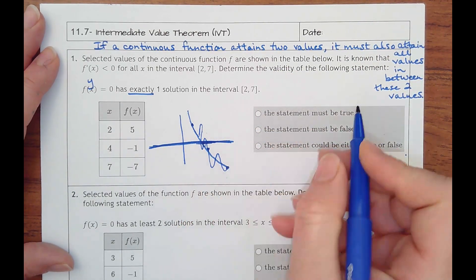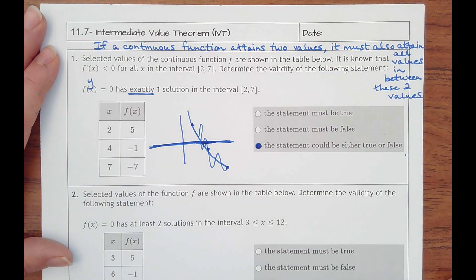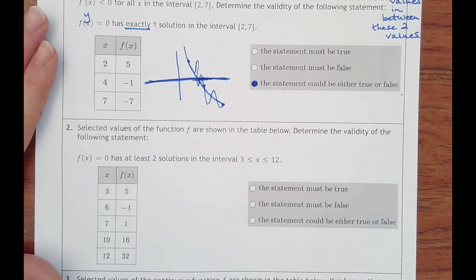And even between this interval. So we could say that it could be true or it could be false. We don't know if it's exactly one. If it would have said at least, then yes.